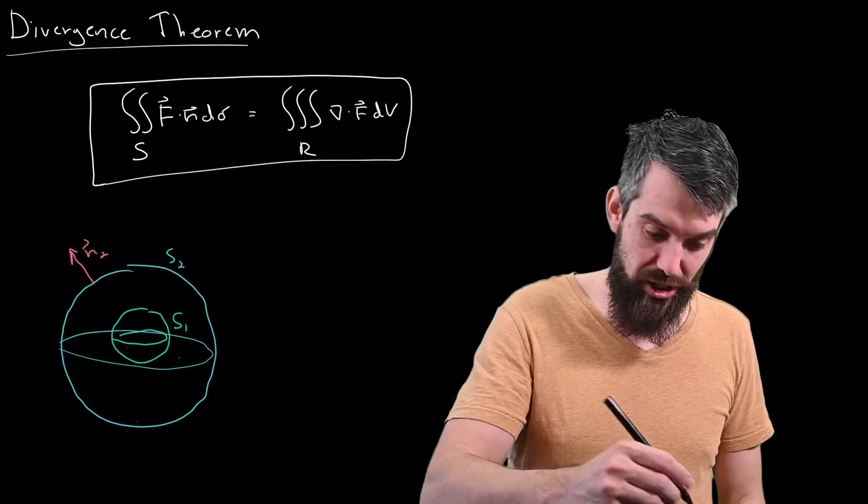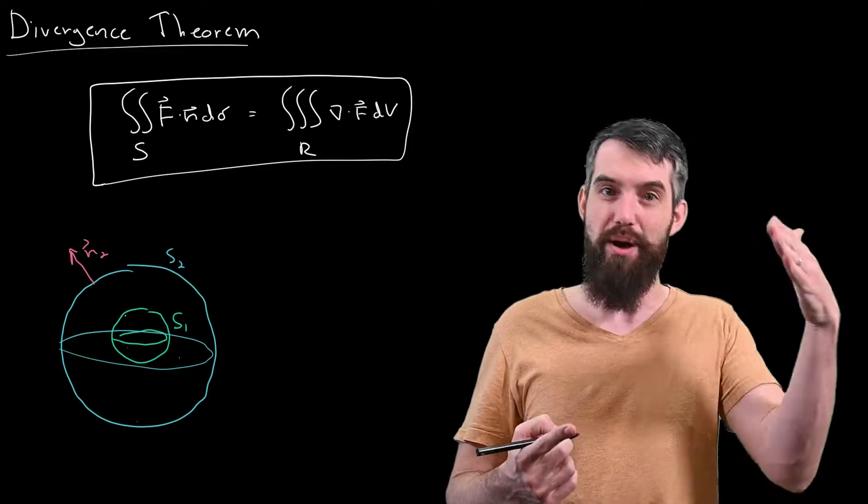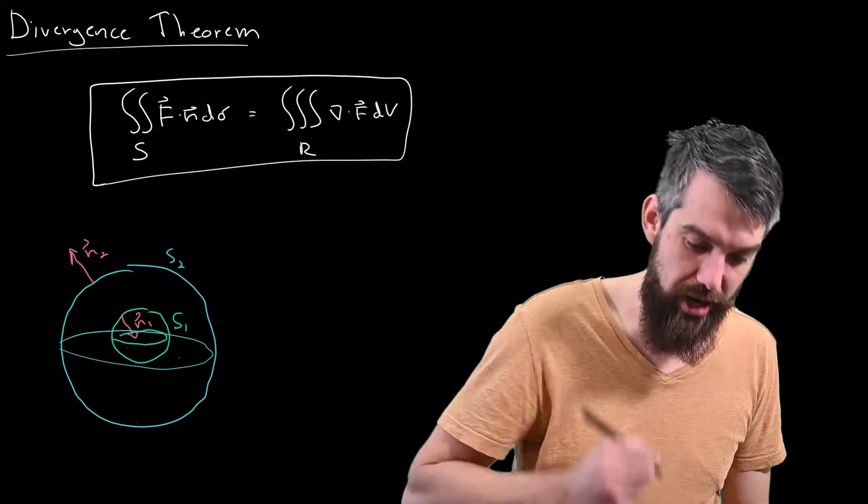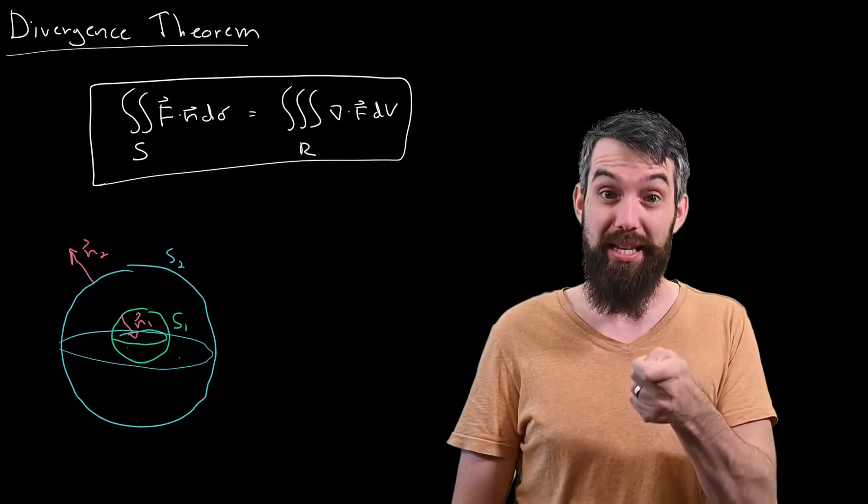And then on the inner surface, the outward normal of the domain I'm talking about, the space between these two spheres, its outward normal would point in towards the origin. And I'll call that N1, the outward normal for the inside surface.